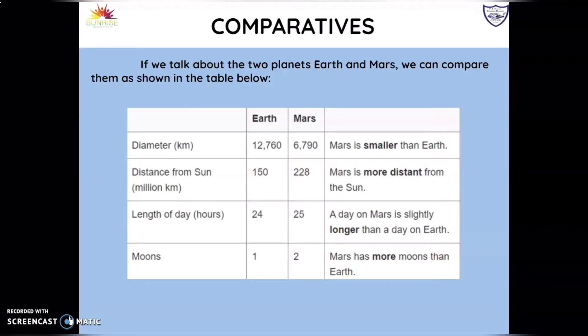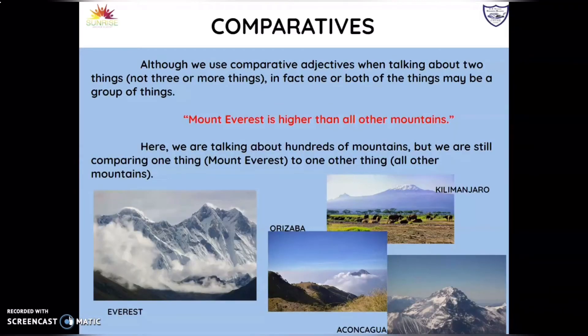Let's say we want to use comparatives to compare one thing to a group of things. For example: Mount Everest is higher than all of the other mountains. Here we're talking about hundreds of mountains and stating that Mount Everest is higher than all of them — so we're comparing a group of things to one thing.